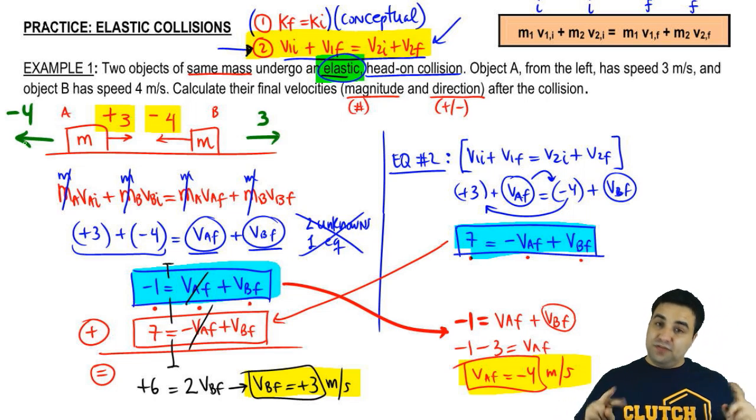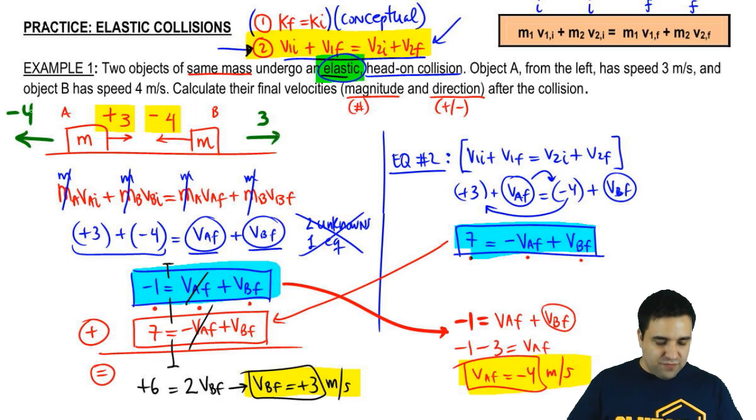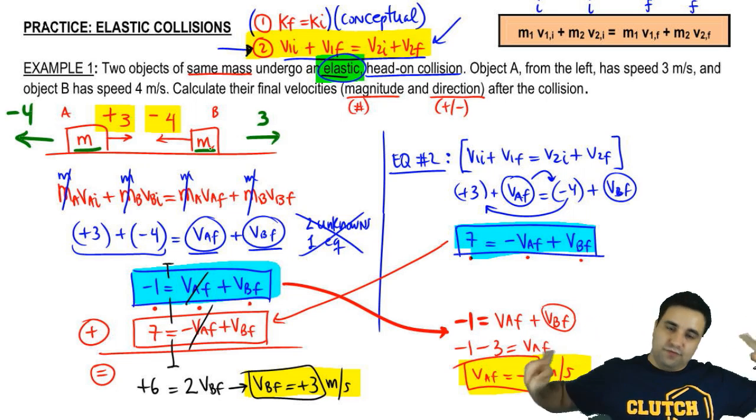You might have noticed that the numbers flipped. This guy was a 3 and ended up with a 4. This guy was a 4 and ended up with a 3. That's what happens when you have elastic collisions, but only happens if you have exactly the same mass. The velocities simply flip.